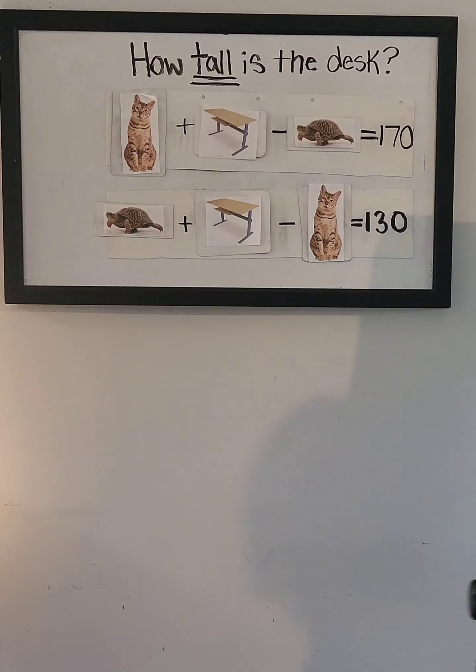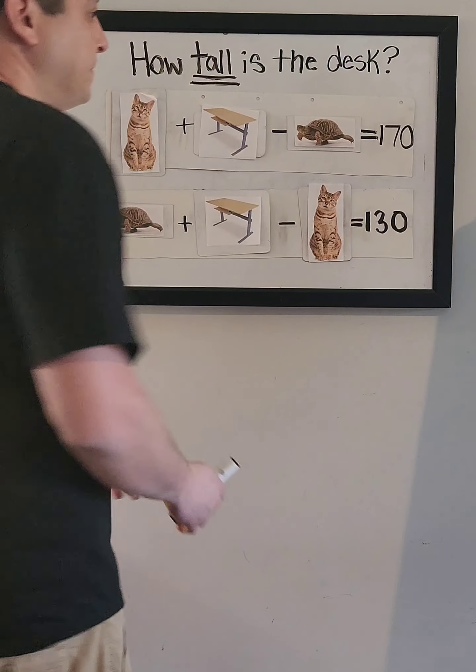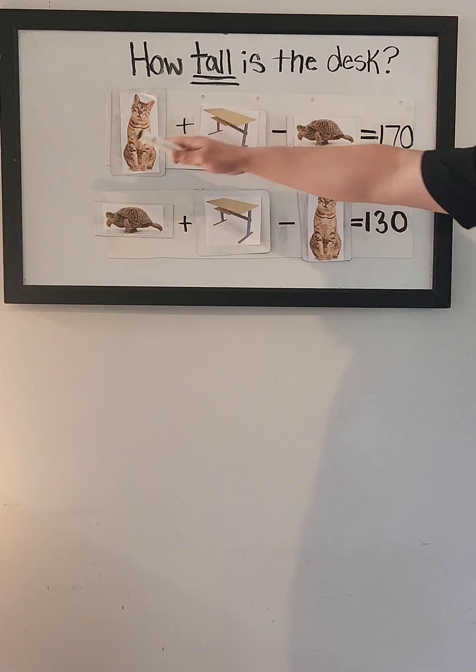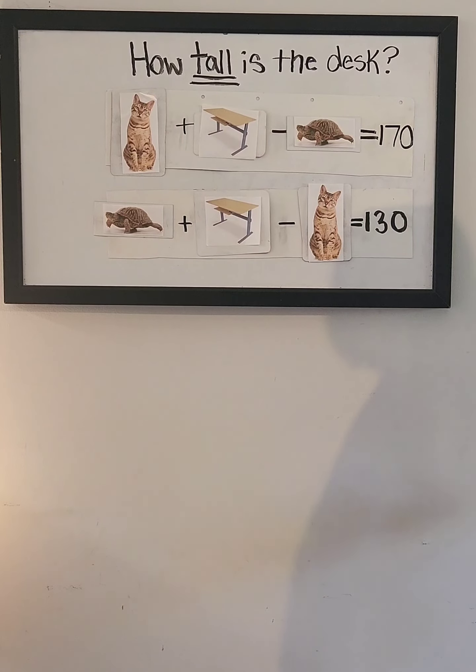So what we have is the cat plus the desk minus the turtle is 170. The turtle plus the desk minus the cat is 130.